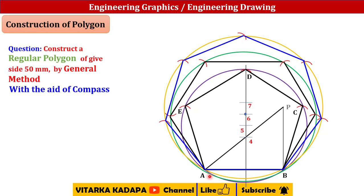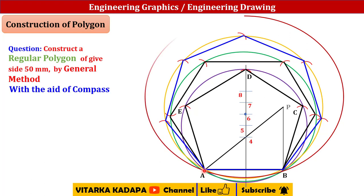For the octagon, take the distance from point 6 to 7 and measure it upward to get point 8. With center at the origin and radius 8A, draw a circle. Repeat the same procedure: take distance AB on the compass and cut arcs on this brown octagon circle.